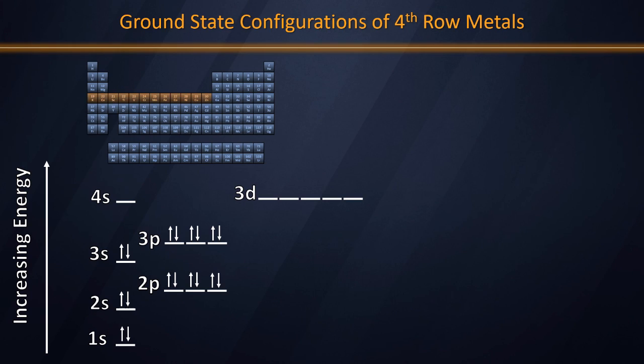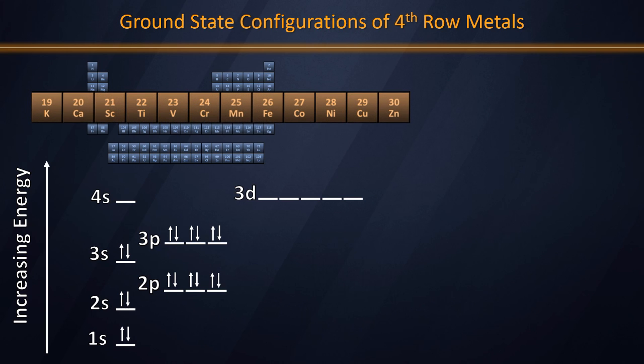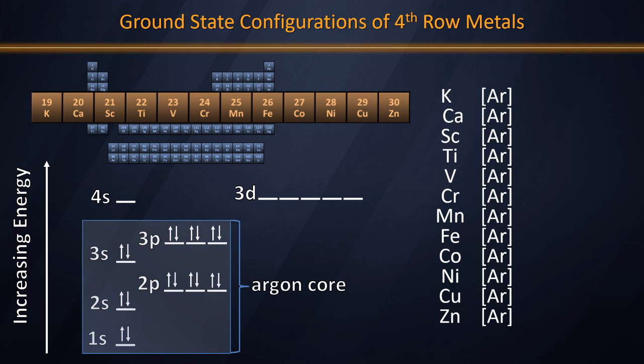Let's take a look again at the fourth row here. Naturally, they all are going to have an argon core in this row in their electron configurations. Potassium and calcium would be the first two. These are filling their 4S subshell and so do not qualify as transition metals.